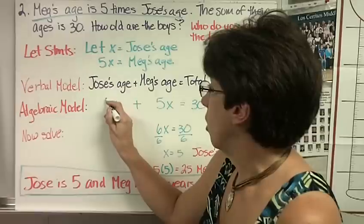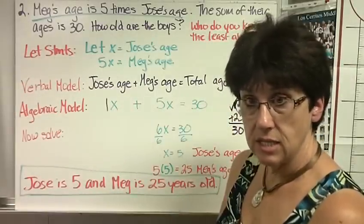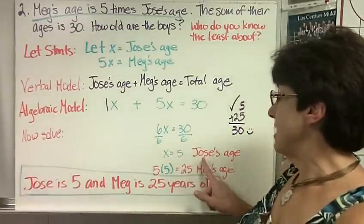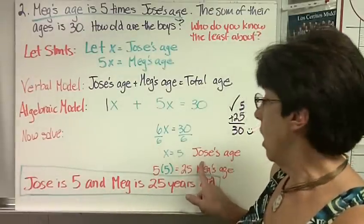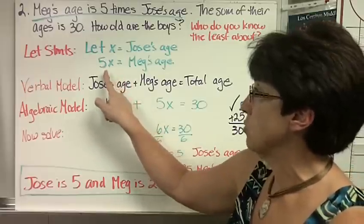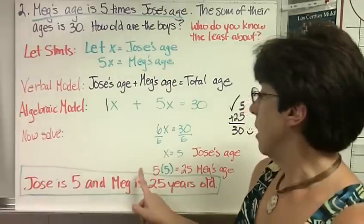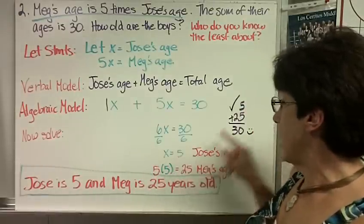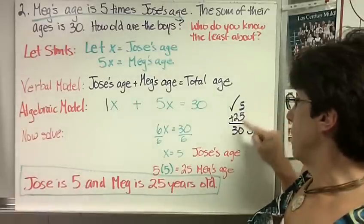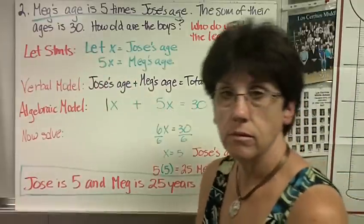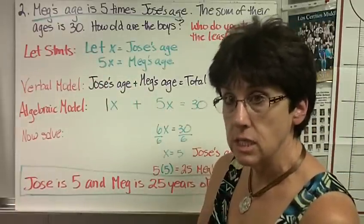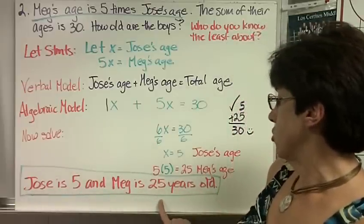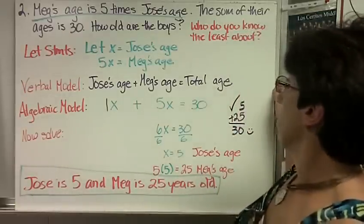Remember, how many x's is this? 1x plus 5x. 6x equals 30. Divide by 6. x equals 5. Remember, this is Jose's age. How do I find Meg's age? I multiply it by 5 because we said 5x is Meg's age. 5 times 5 is 25, so that is Meg's age. And we can check that by adding them together. Jose's age plus Meg's age, total age. Yep, it said 30. I'm correct. But you need to write their ages in a sentence because it's a word problem, so it gets a word answer. Jose is 5 and Meg is 25 years old.